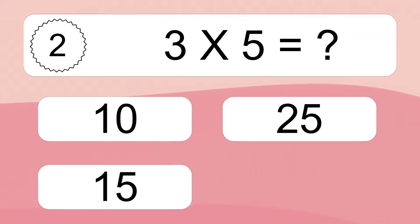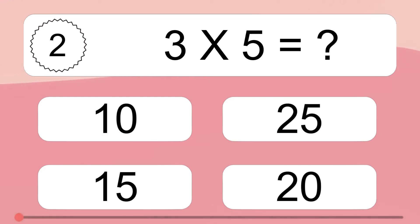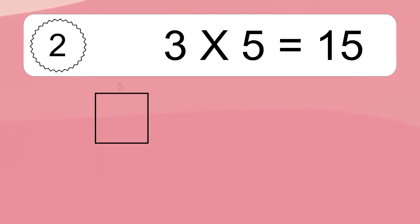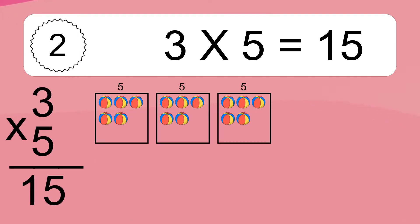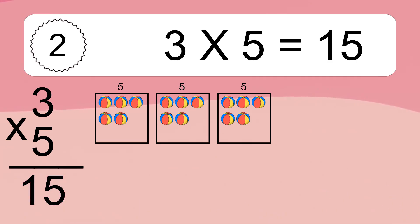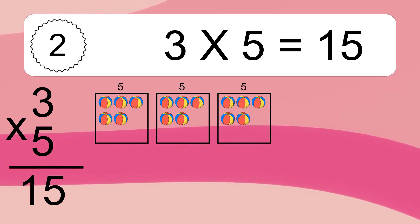3 times 5 equals what? 3 times 5 equals 15. We have 3 boxes, and each box has 5 colorful balls inside. If you count all the balls in all the boxes together, you will have 3 times 5 balls. This equals 15 balls.